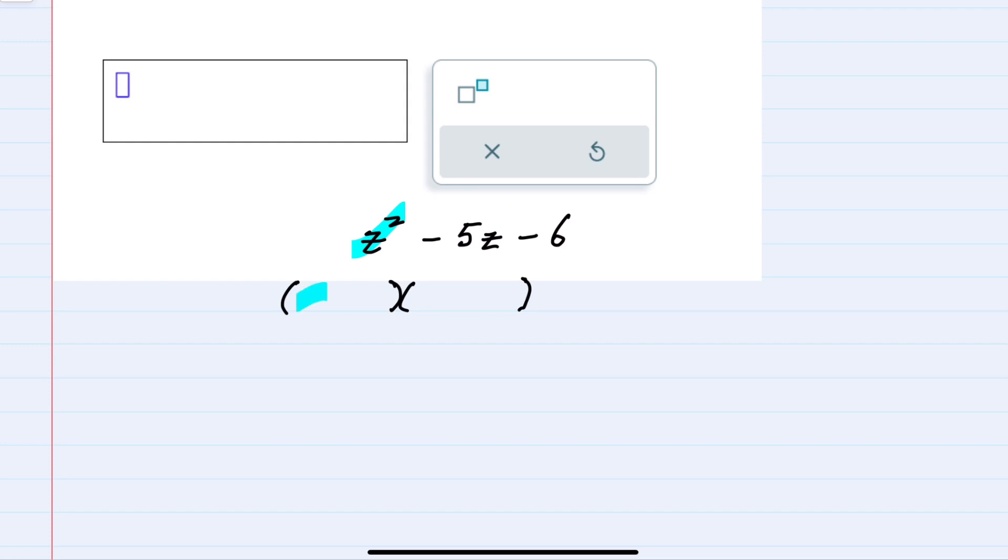What two terms can I multiply that will result in z squared? Two things that multiply to give me z squared would be z and z. So only one option for terms to multiply that result in z squared.